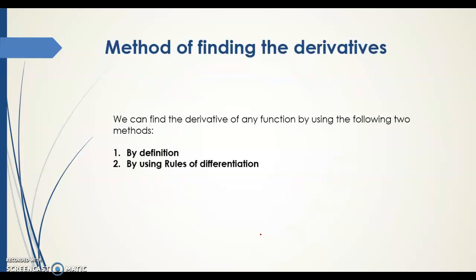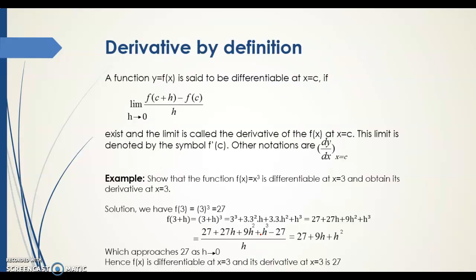Next, let's look at the methods of finding the derivatives. There are two ways: by definition, and by using the rules of differentiation. By definition, a function y = f(x) is said to be differentiable at x = c only if the limit as h tends to 0 of [f(c+h) − f(c)] / h exists. This limit is called the derivative of the function at x = c.